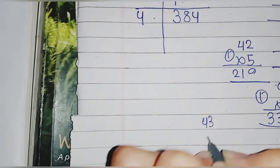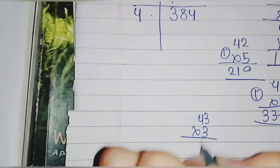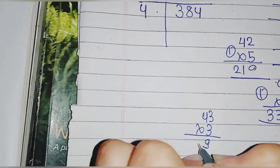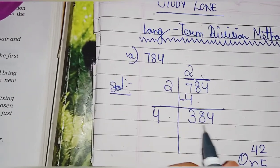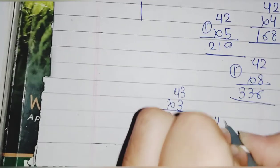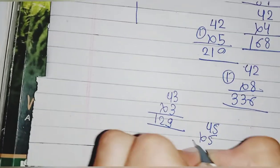That will be 43×3. 3×3 are 9 and 3×4 are 12, giving us 129, which is still very much less than 384. So we will try 45×5. 5×5 are 25, 5×4 is 20, it will be 225, which is still less.